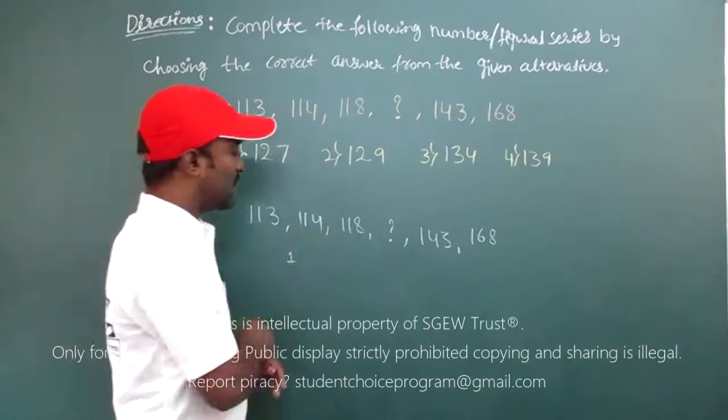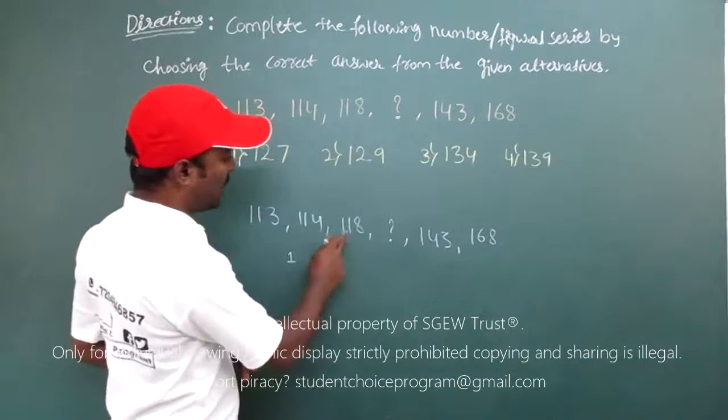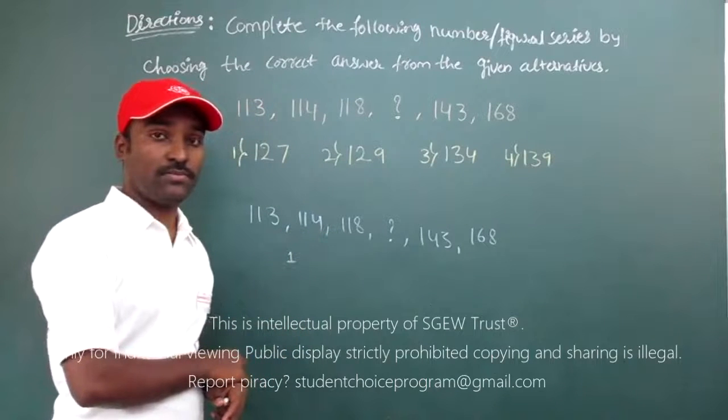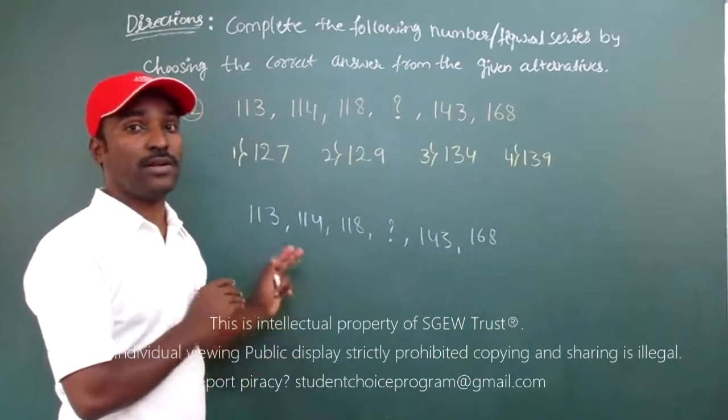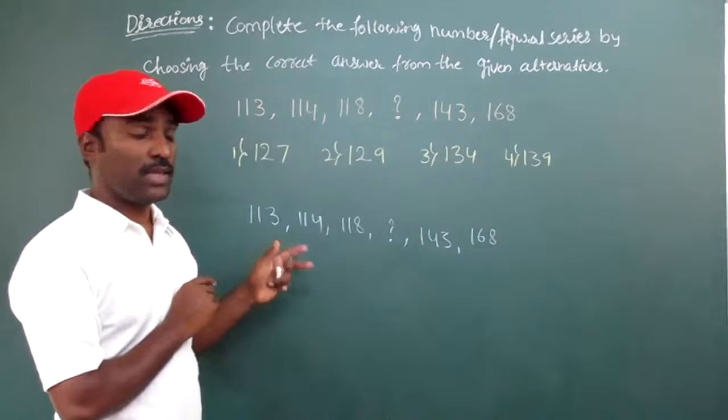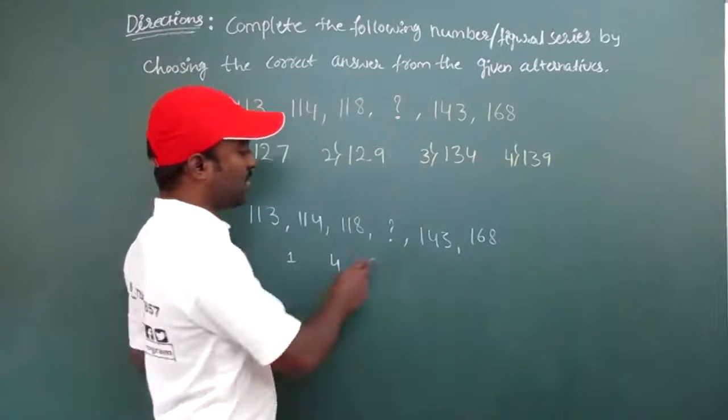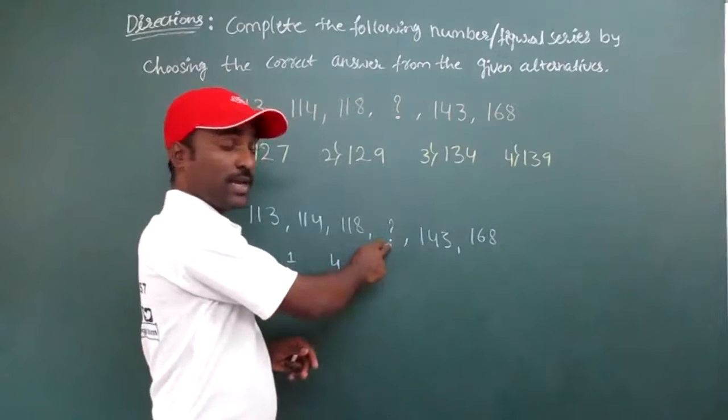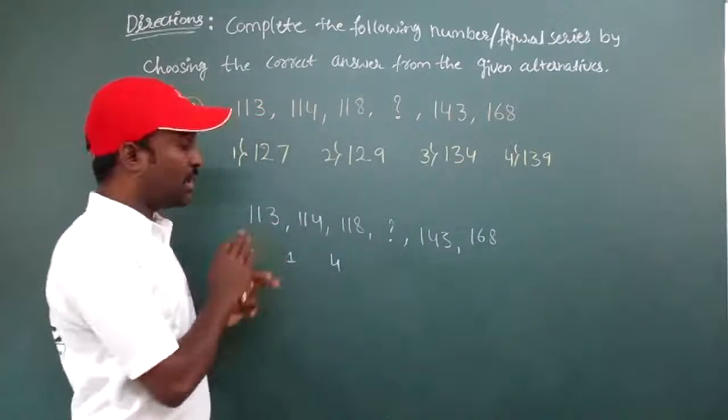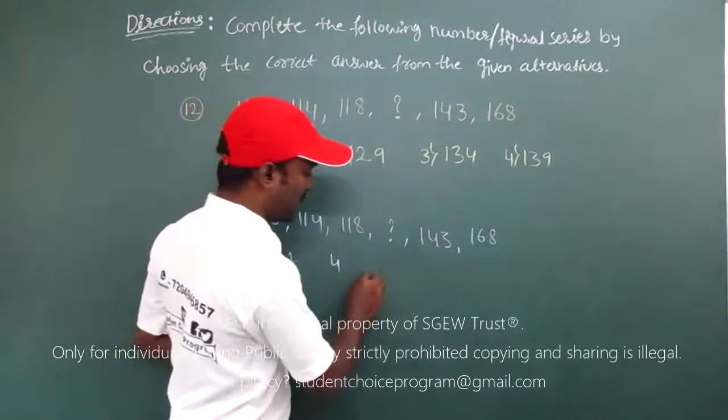Moving to next numbers. 118 minus 114. 118 minus 114, yes, it is 4. Next, here I am having question mark. I can't get difference. Leave that. So I will get some number here.